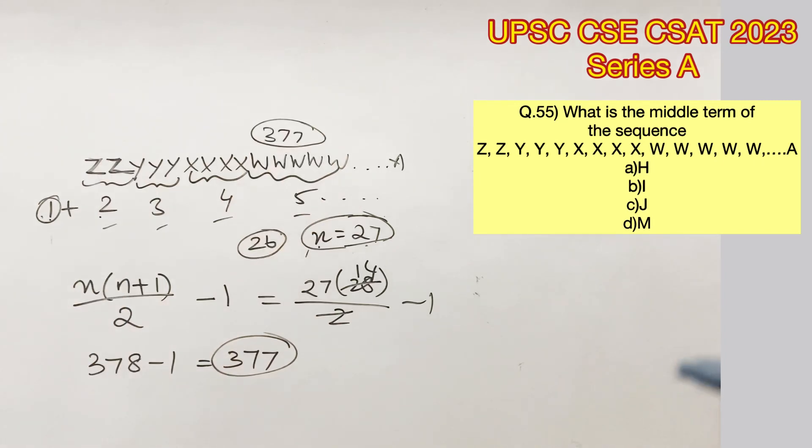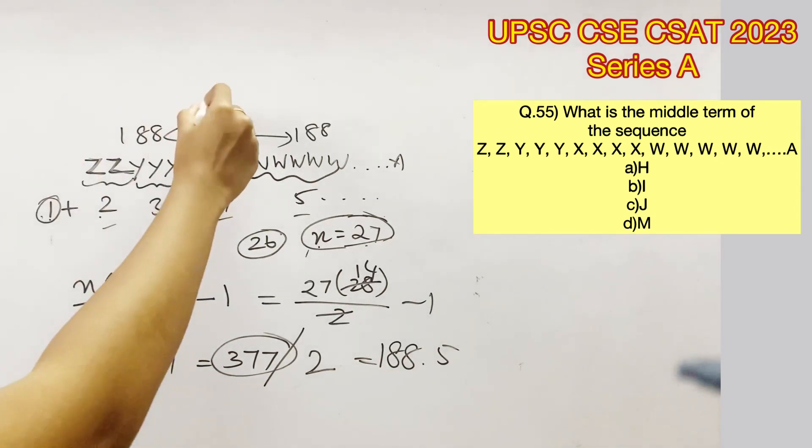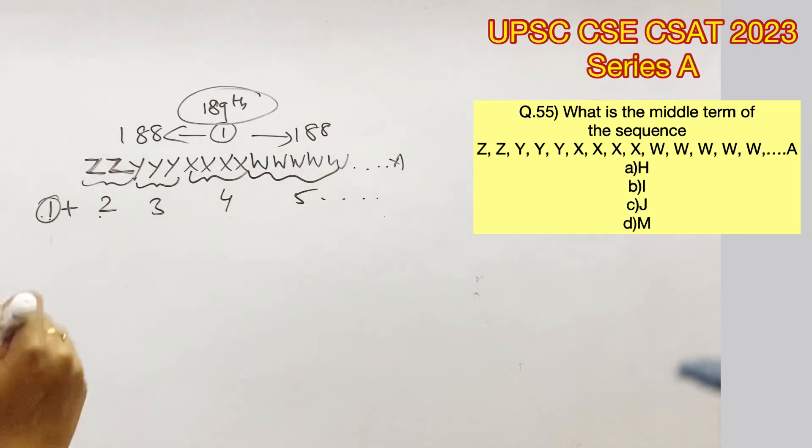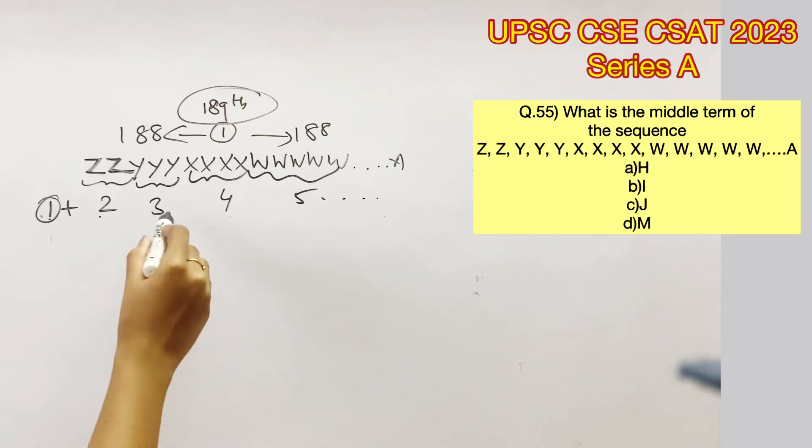To find the middle term, let's divide 377 by 2. That will give us 188.5, which means we have 188 terms on either sides of the middle term. Therefore, 189th term would be the middle term. Now to find out which alphabet is occupying 189th position...